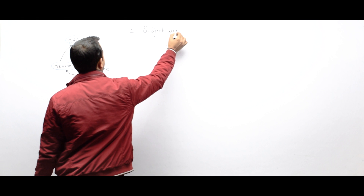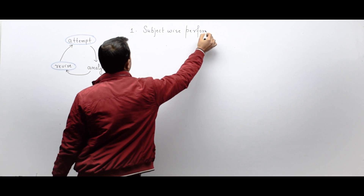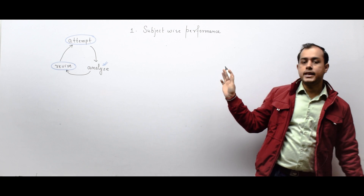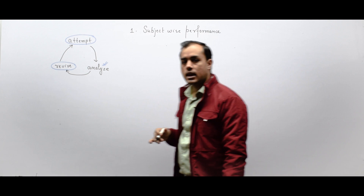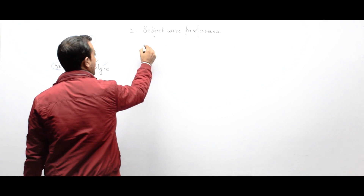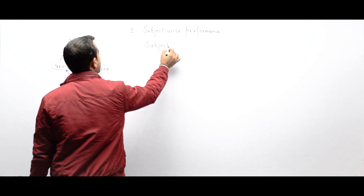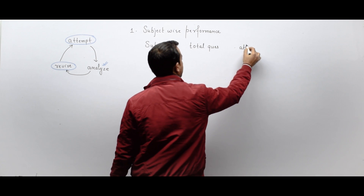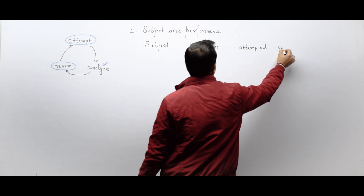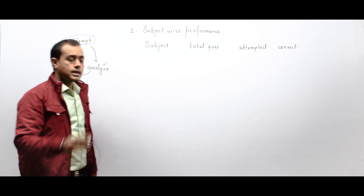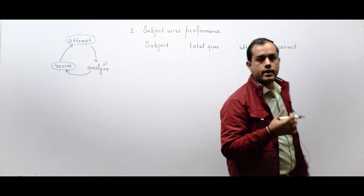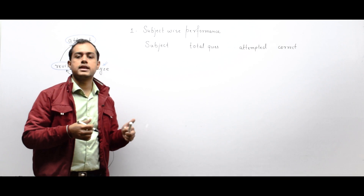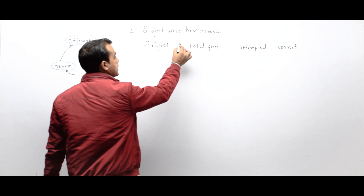This video is applicable to any engineering branch — all students preparing for GATE. That is why I will not be taking the name of specific subjects; I am assuming you very well know the subjects covered in your stream. We need to make a table with columns: subject, total questions, attempted, and correct. Some test series may already provide this analysis — like Creatrix test series — but if not, you can make such a table yourself.